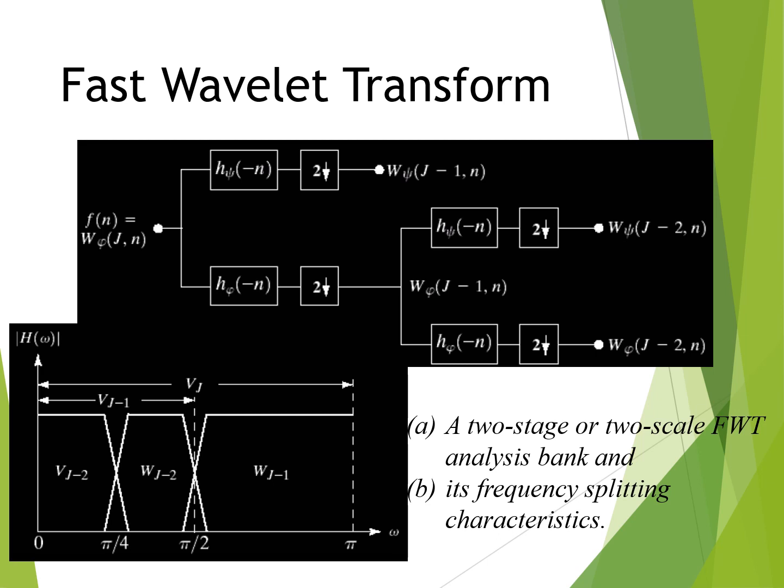This figure contains a two-stage, or two-scale, FWT analysis bank. The filter bank splits the original function into a low-pass approximation component corresponding to scaling coefficients W_phi of j minus 1, n, and high-pass detail components corresponding to coefficients W_psi of j minus 1, n. This is the graphical structure of the above figure, where the scaling space V of j is split into wavelet subspace W of j minus 1 and scaling subspace V of j minus 1.